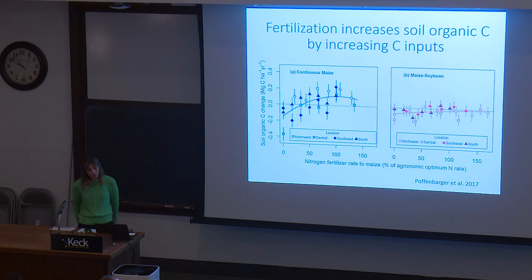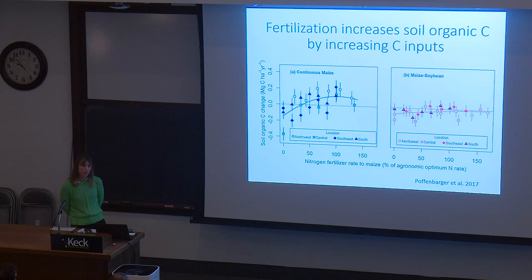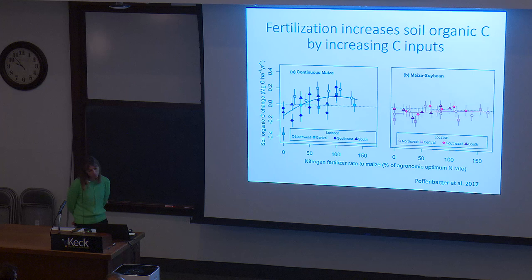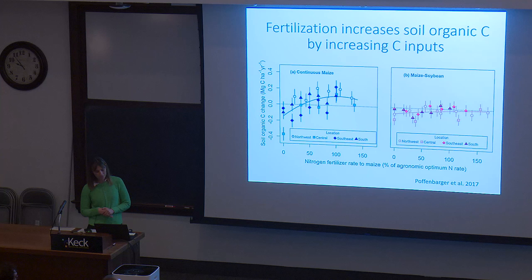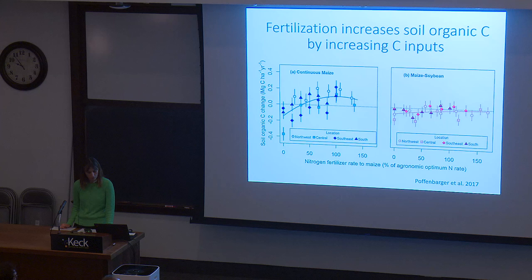Many different agronomic practices affect crop productivity, which in turn affects soil organic carbon. For example, adding fertilizer leads to higher biomass production and usually an increase in soil carbon. In a continuous maize system, increasing the nitrogen fertilizer rate leads to a more positive soil carbon change, which is a much more pronounced effect than what we see with soybean in the rotation, since soybean is not responsive to nitrogen fertilizer.